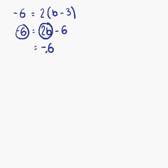Then we can start to move things. Minus 6. Change side. Change sign. Becomes plus 6. 2b doesn't have a sign at the front, which means it's positive. When we change its side, it becomes negative 2b.